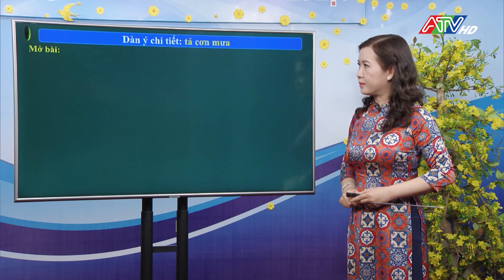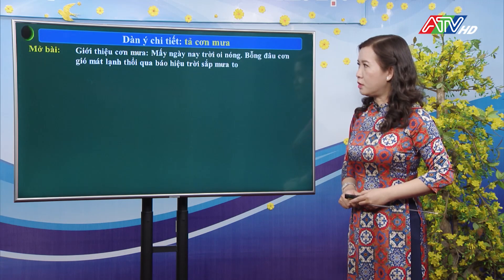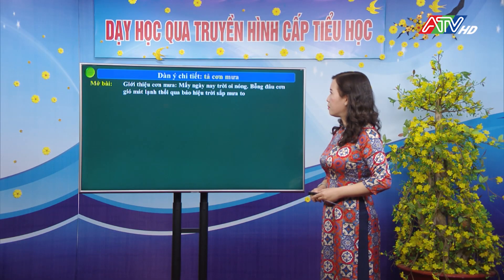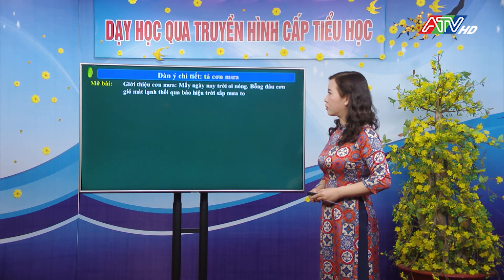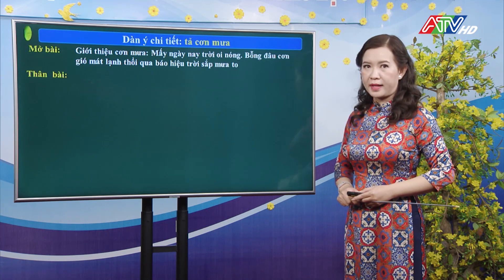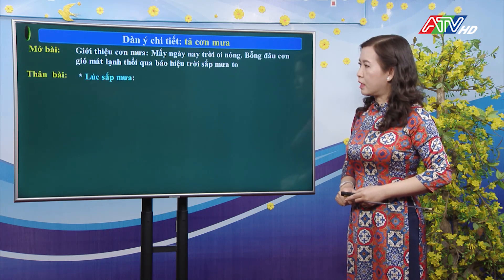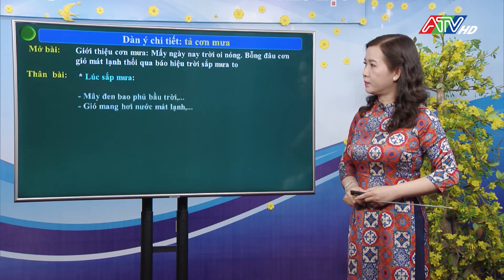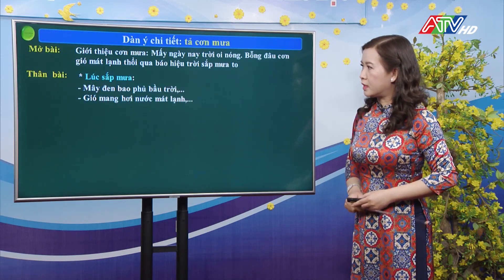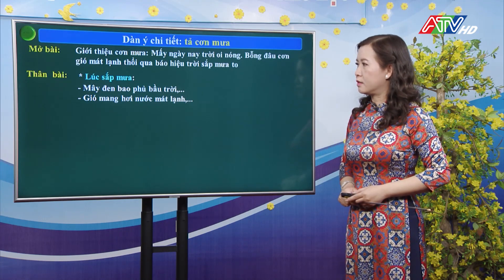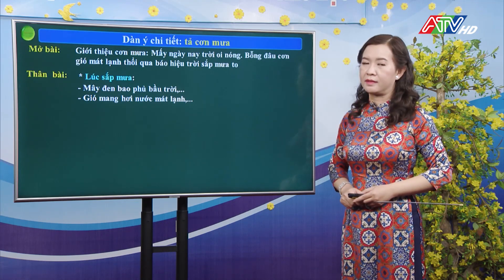Phần mở bài: các con sẽ giới thiệu cơn mưa. Ví dụ: mấy ngày nay trời oi nóng, bỗng đâu cơn gió mát lạnh thổi qua, báo hiệu trời sắp mưa to. Về phần thân bài, các con sẽ tả cảnh lúc sắp mưa: mây đen bao phủ bầu trời, gió mang hơi nước mát lạnh, v.v.